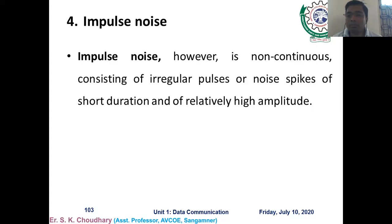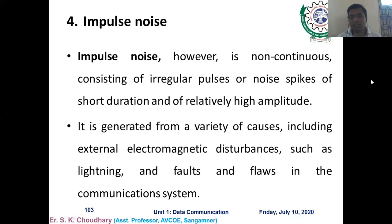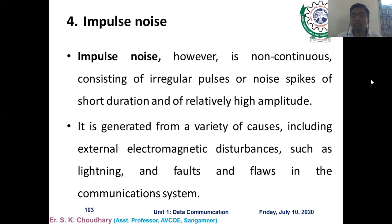Impulse noise is a non-continuous noise consisting of irregular spikes of short duration but relatively high amplitude. It is generated by various causes like external electromagnetic disturbances such as lightning. That is why it is suggested to avoid using the telephone network during lightning or heavy rain, as irregular pulses or spikes can hamper the quality of the signal.